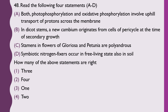Question 48. Read the following four statements: A — both photophosphorylation and oxidative phosphorylation involve uphill transport of proton across the membrane; B — in dicot stem, a new cambium originates from cells of pericycle at the time of secondary growth; C — stamens in flowers of Gloriosa and Petunia are polyandrous; D — symbiotic nitrogen fixers occur in free-living state also in soil. How many of these statements are correct? The correct answer is option 4 — 2 statements are correct.